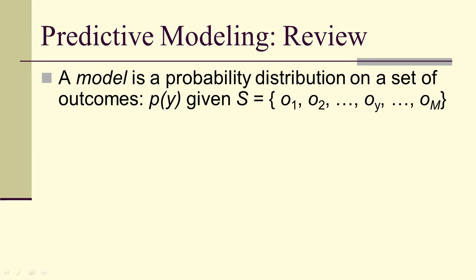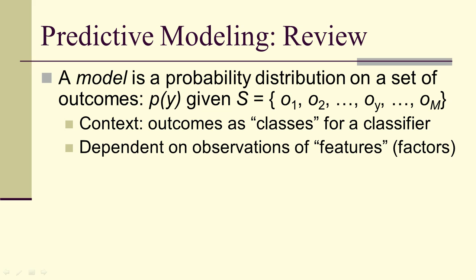Let's review some predictive modeling. A model is a probability distribution on a set of outcomes. Typically, our context will be these outcomes or classes for a classifier, and the y will be dependent on observations of features or factors.